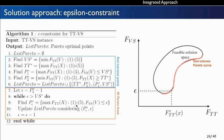The main idea of the epsilon-constraint algorithm is to optimize the timetabling objective function while adding an additional constraint that restricts the vehicle scheduling objective function to be less than or equal to an epsilon parameter. By iterating over different values of epsilon, we are able to find Pareto-optimal solutions. The algorithm finds the extreme points first, then fills the Pareto front by using different values of the epsilon constraint to find interior points.